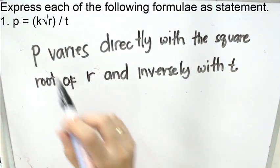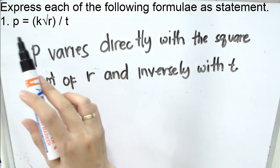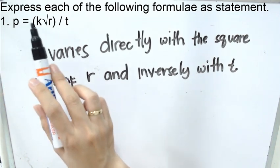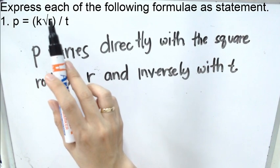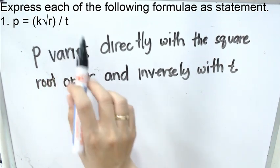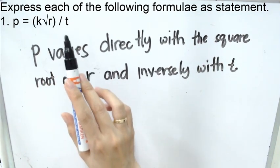Again, we have the following formula. We read it as p varies directly with the square root of r, and inversely with t.